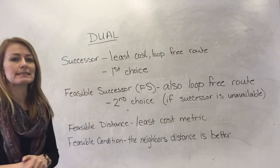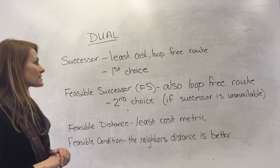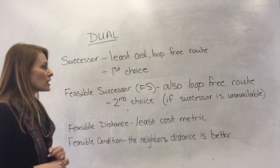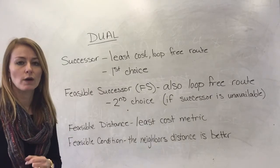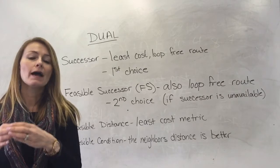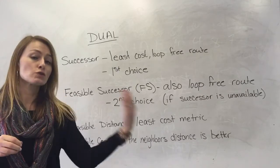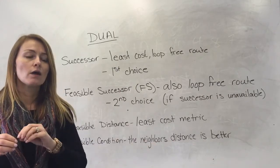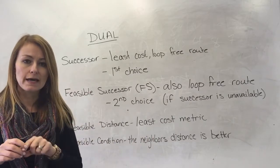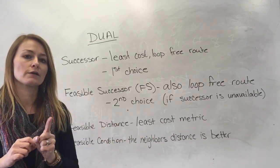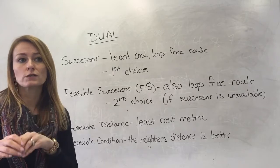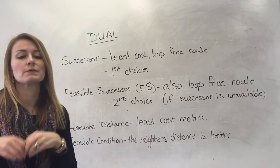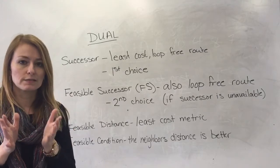First of all, you have a successor. The successor is the least cost loop-free route. So you have a router and it needs to get a packet to a destination. The route it's going to take needs to be loop-free - that's the number one criteria. The shortest or the least cost, because it's not just about distance.